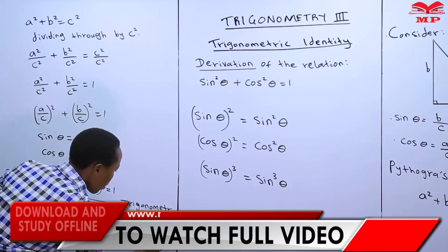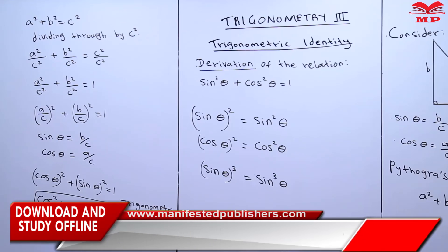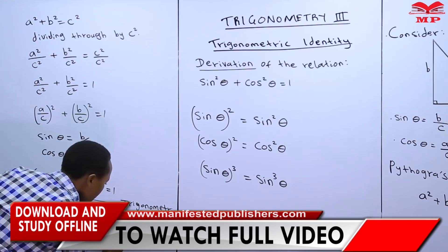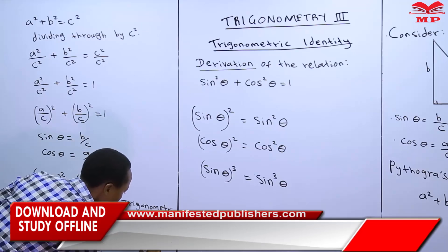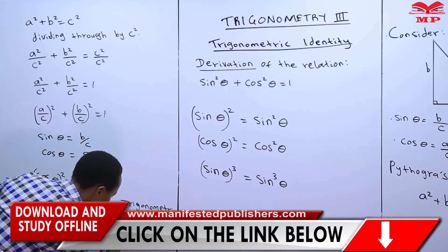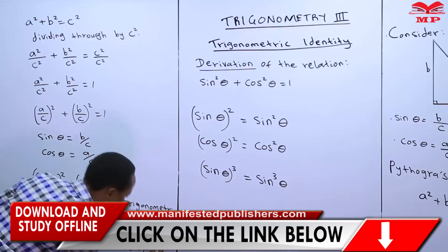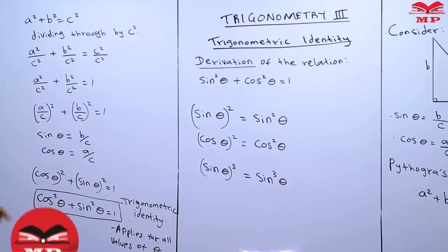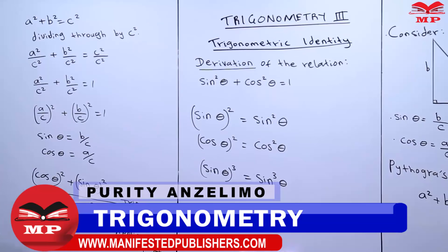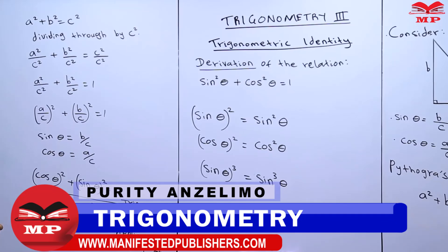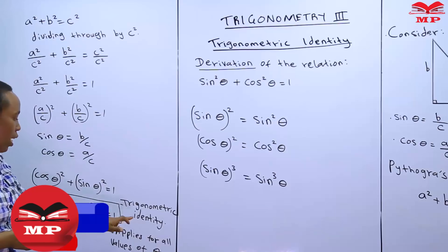It is what we refer to as the trigonometric identity, and it applies for all values of theta. Cos squared theta plus sin squared theta is equal to 1 — and we refer to it as the trigonometric identity.